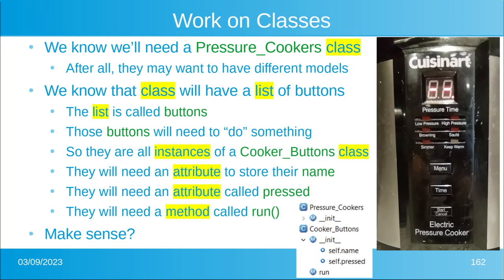Let's work on the classes for this pressure cooker. We know we're going to need a pressure cookers class — they may want different models, some gray, some black, some silver. We know this class is going to have a list of buttons, and those buttons are going to need to do something, so they'll be of a different class. This is what we call a container class — one class that holds other classes, like the horse hand containing the horse feet classes. They'll need an attribute to store their name, an attribute to know whether they were pressed, and a method called run.